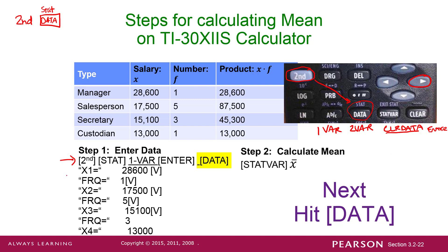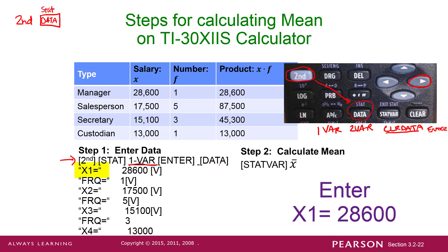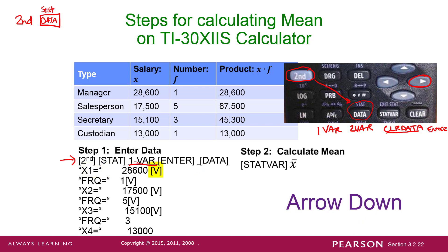Okay, just to clear the data first. Then if you go Second Stat — or it might be showing already — you'll see 'One Var' underlined. We are always, until maybe at the very end of the semester, going to use One Var. That stands for one variable statistics, meaning one data set is being analyzed. So you're always going to do One Var, then Enter.